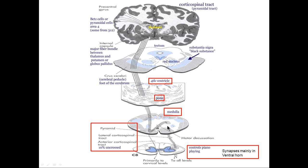There is a decussation at the lower part of the medulla, right where it meets the spinal cord. Ninety percent of these corticospinal tract fibers cross the midline in what's called the motor decussation, and then pile up in the lateral funiculus of the spinal cord to become the lateral corticospinal tract. Those fibers that do not cross form the anterior corticospinal tract — about ten percent. From cervical to sacral levels, these fibers synapse mainly on the large alpha motor neurons of the ventral horn.